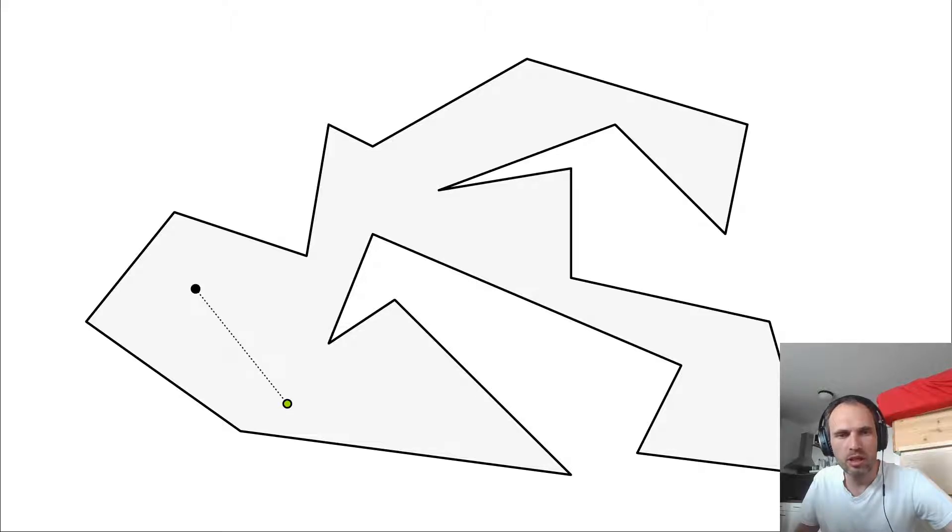So what does it mean to see? So this guard can see this point because the line segment is contained, but I can't see that point because the line segment is not contained.